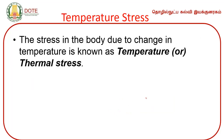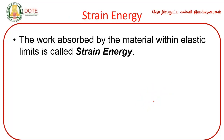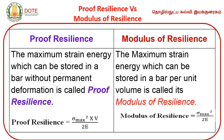Temperature stress is the stress in a body due to change in temperature. Strain energy is the work absorbed by the material within the elastic limit; it can be converted into useful energy. The maximum strain energy which can be stored in a bar without permanent deformation is called proof resilience, and the maximum strain energy stored per unit volume is called modulus of resilience.